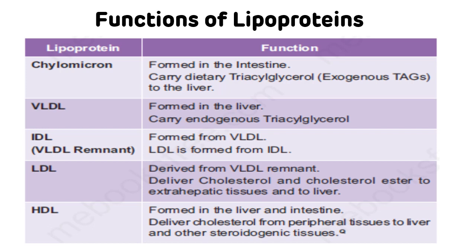Now we will see the functions of lipoproteins. Chylomicrons, formed in the intestine, carry dietary (exogenous) triacylglycerol to the liver. VLDL, formed in the liver, carries endogenous triacylglycerol. IDL, formed from VLDL, functions to form LDL. LDL delivers cholesterol and cholesterol ester to extra-hepatic tissues. HDL, known as good cholesterol and formed in the liver and intestine, delivers cholesterol from peripheral tissues back to the liver and other steroidogenic tissues.